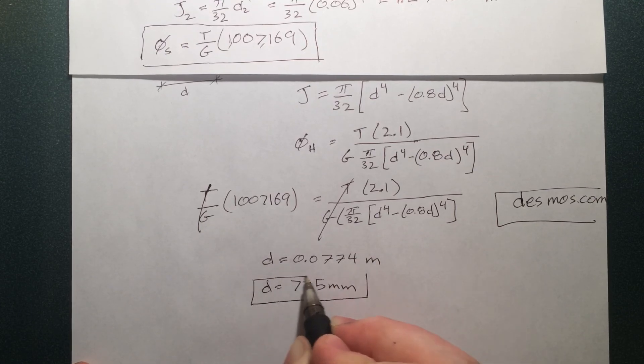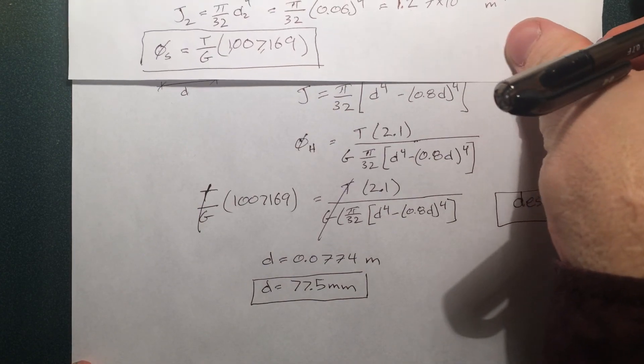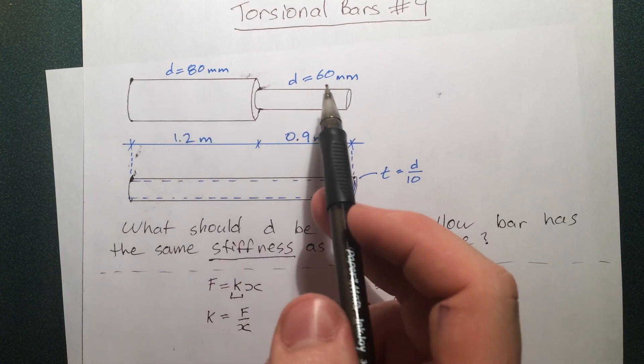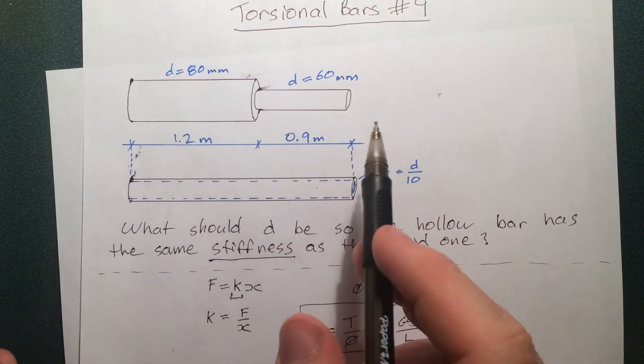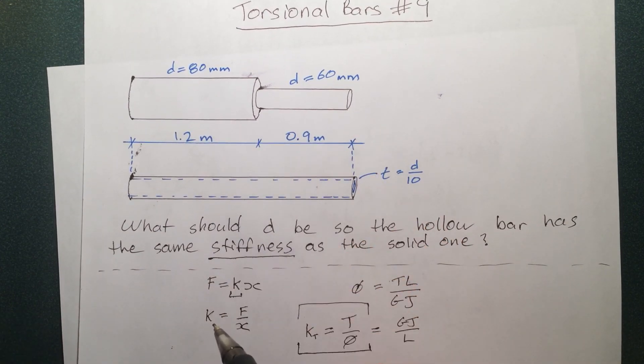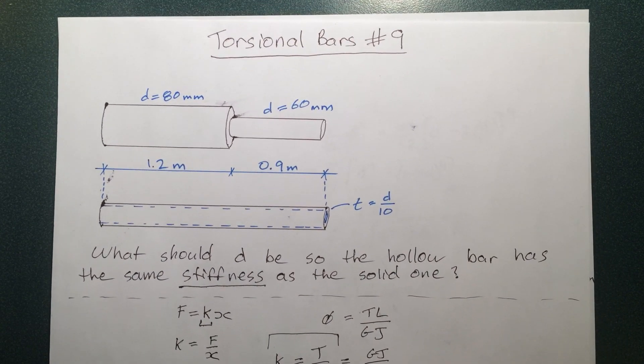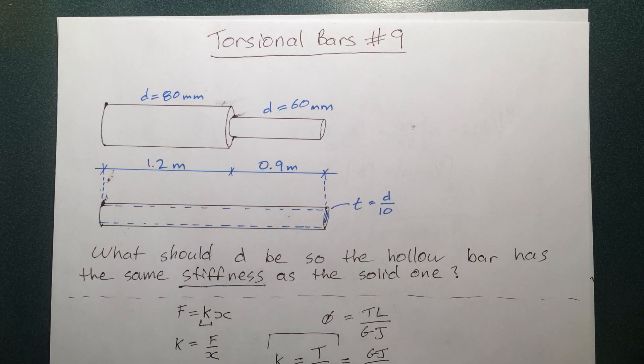So you can do that and you can find D is 0.0774 meters or D is 77 and a half millimeters. So let's just do a quick check 77 and a half millimeters this one here is 80 and 60 77 that's between the two that totally makes sense. So I hope this video helped you guys out and I'll see you in my next torsional bar video.